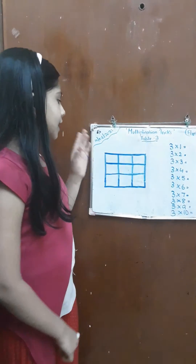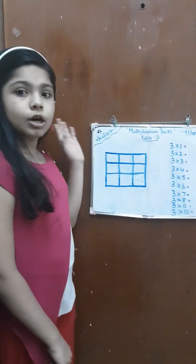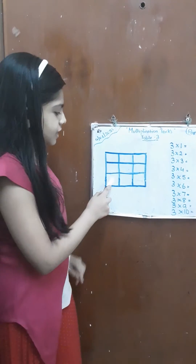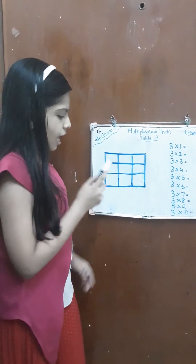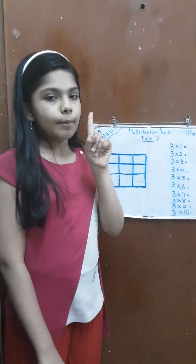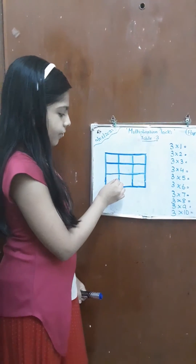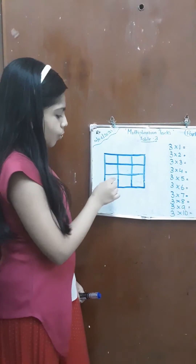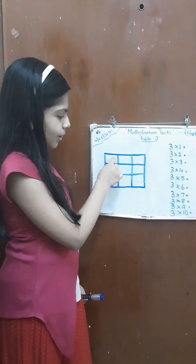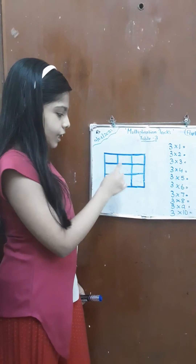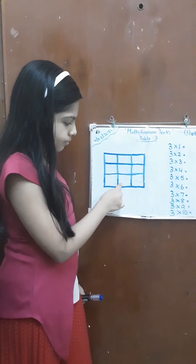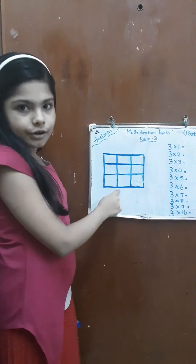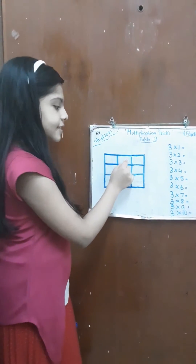we are going to go to the left most bottom corner and we are going to start writing number 1. So from here we have to write 1. Now we have to go up: 1, 2, 3. Now again go to the down column — that means here — and we are going to write 4, 5, 6.